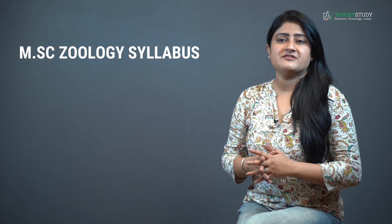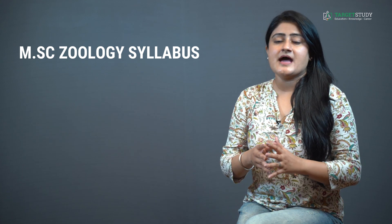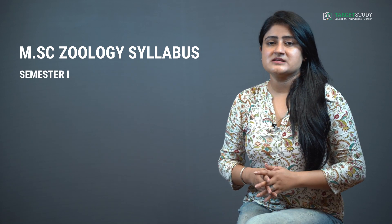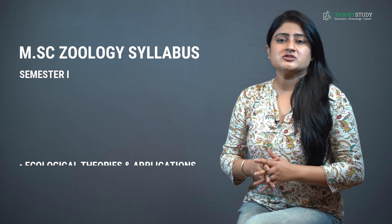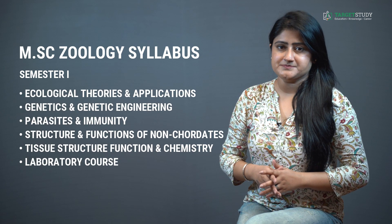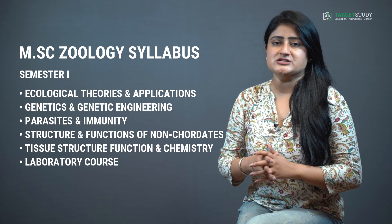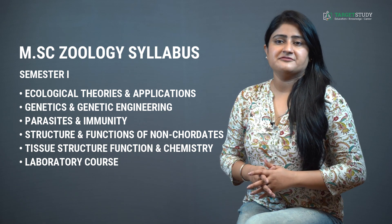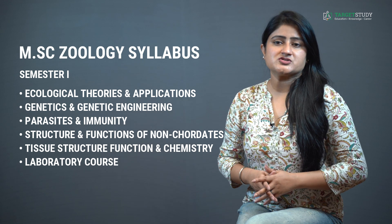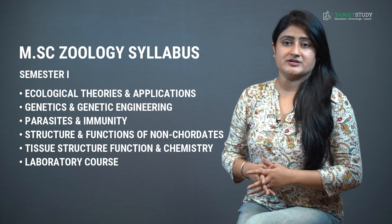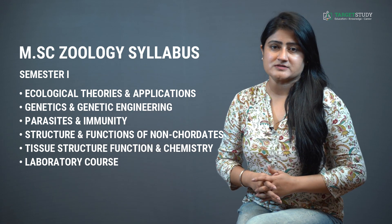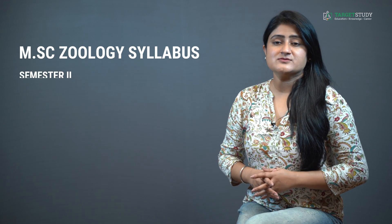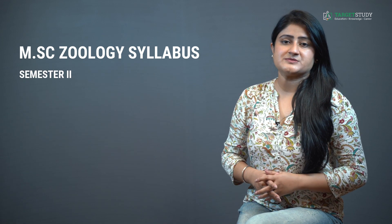The two-year full-time MSc Zoology course has been divided into four semesters of six months each. In MSc Zoology Semester One, you will study subjects like ecological theories and applications, genetics and genetic engineering, parasites and immunity, structure and function of non-chordates, tissue structure, function and chemistry, and a laboratory course.